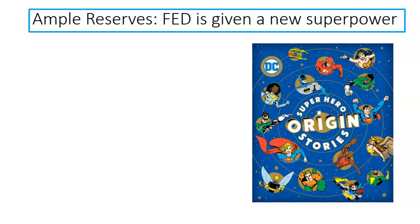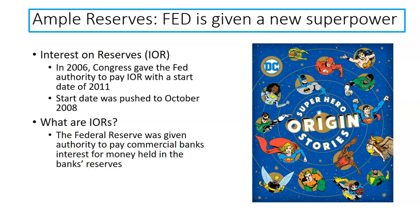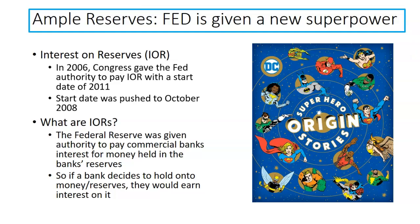So supply changes of money don't really impact it. What can the Fed now do? They're given a new superpower. Let's talk about the Fed's origin story for their newest superpower called interest on reserves. In 2006, Congress gave the Federal Reserve authority to pay interest on reserves with a start date of 2011. Because of what was going on in 2008 — the Great Recession, housing crisis — Congress said you can actually start in 2008. The Federal Reserve was given authority to pay commercial banks interest for money held in the bank's reserves. Essentially, if a bank didn't lend out their money, whatever money they didn't lend out, they get interest on it — this is the interest on reserves, and the Federal Reserve pays for that.